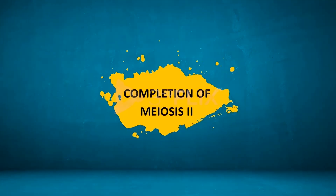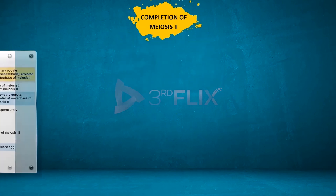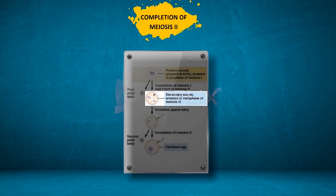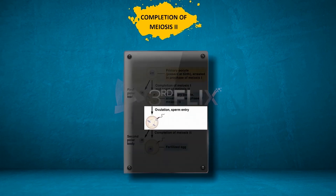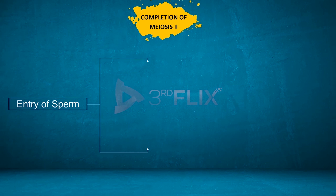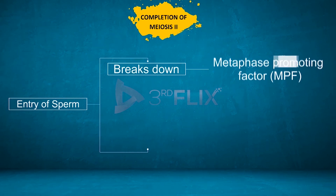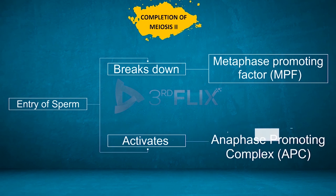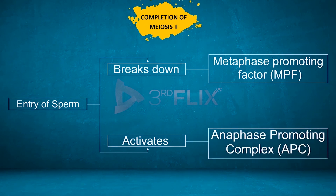Completion of meiosis 2. The secondary oocyte released at the time of ovulation remains suspended at metaphase 2. At the time of fertilization, entry of the sperm restarts the cell cycle in the secondary oocyte. Entry of the sperm breaks down the metaphase promoting factor, MPF, and activates the anaphase promoting complex, APC.